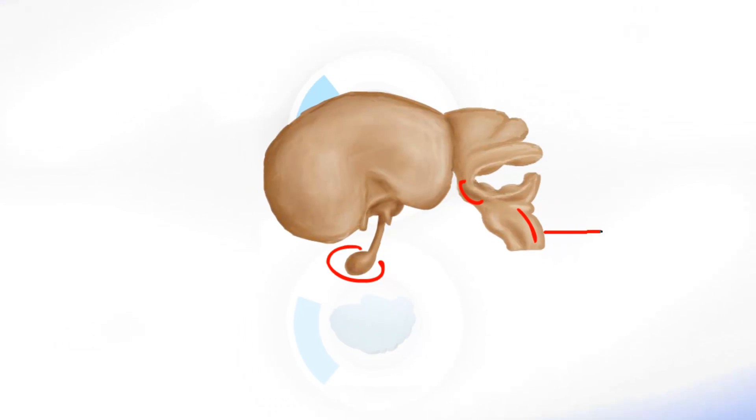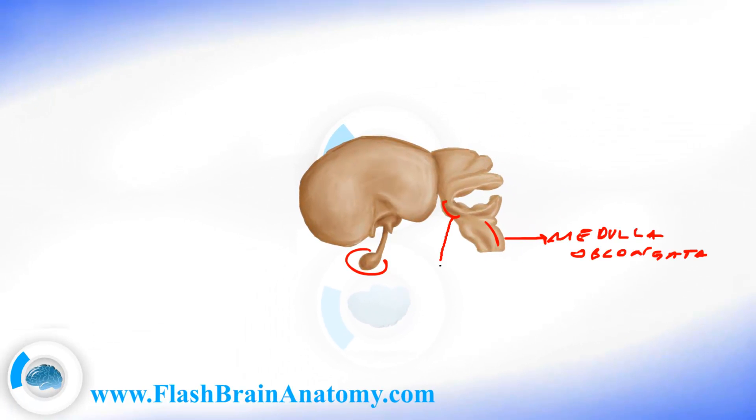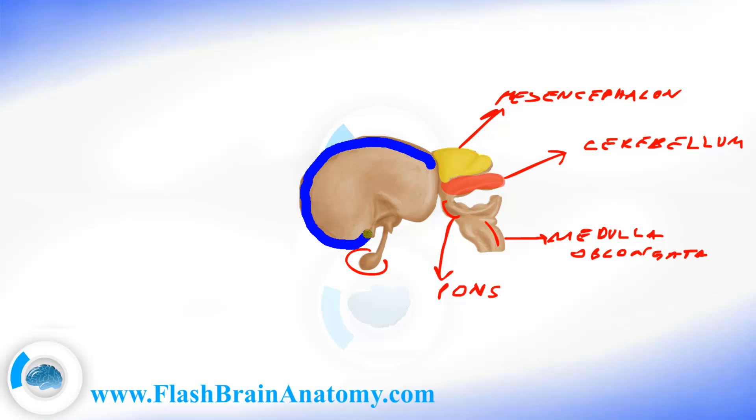Now let me write all this again. This is the medulla oblongata. Then the pons. Then the cerebellum. Then the mesencephalon. Then comes the huge telencephalon part. Already at this point it covers most of the diencephalon. But it does not show its final shape. In the next drawing I will pretty much illustrate its final shape.